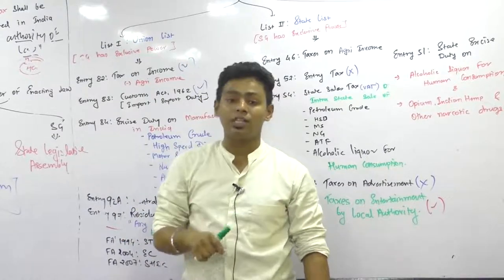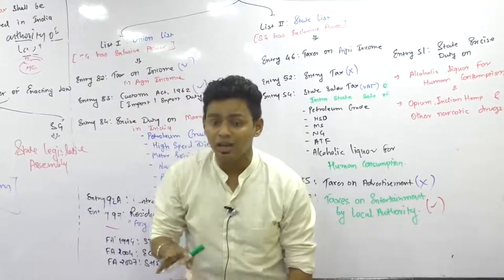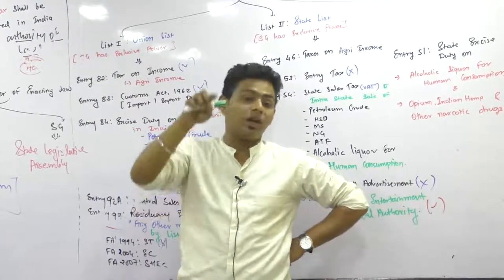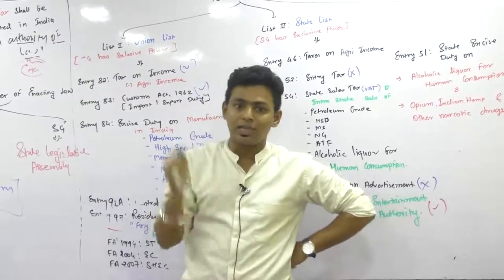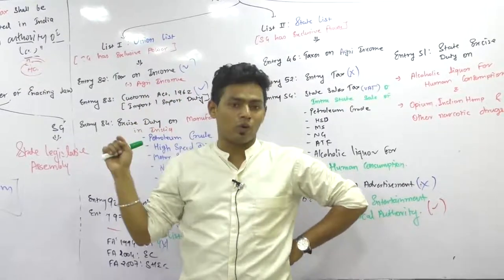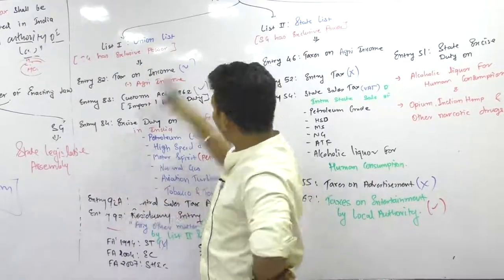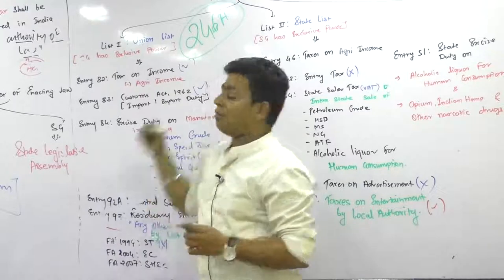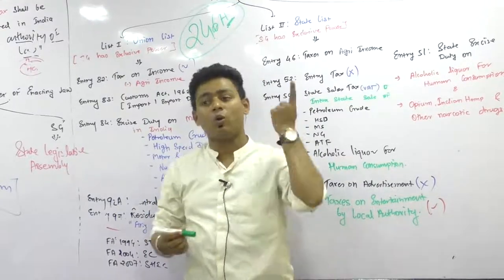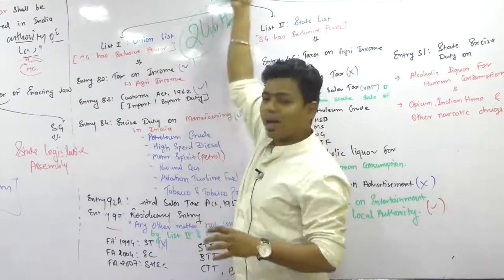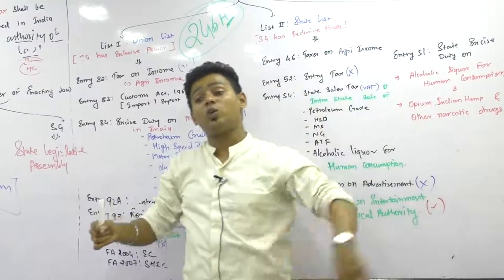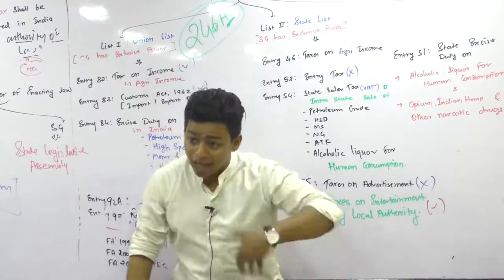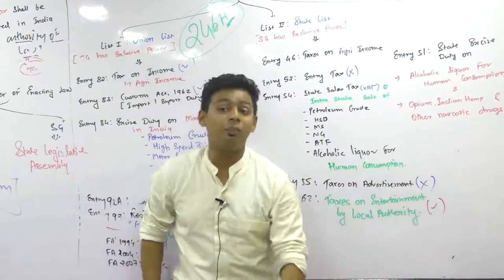This question may come in exams because many people with general understanding know there is CGST and SGST, so they might feel that GST is under the Concurrent List since 'concurrent' means both governments together. But the Concurrent List doesn't have any revenue law - any revenue law. GST is neither written in the Union List nor in the State List. That's the origin of Article 246A. Whenever you see 'A' in an article, that means it was not originally in the Constitution. They inserted a whole new article to bring GST into India.